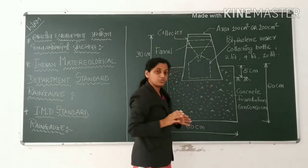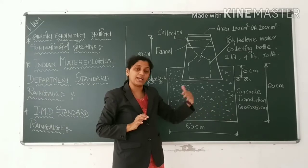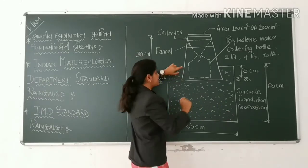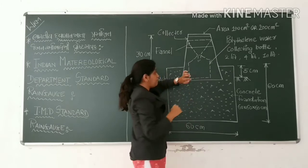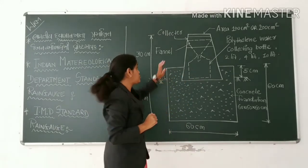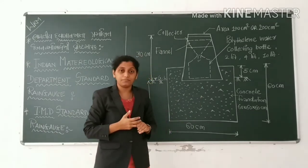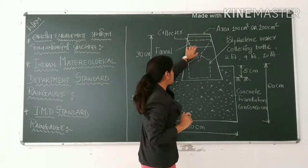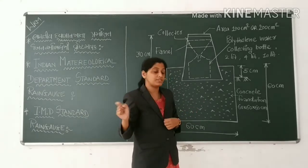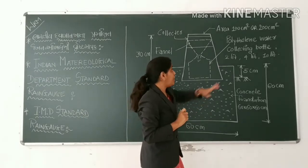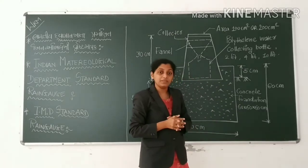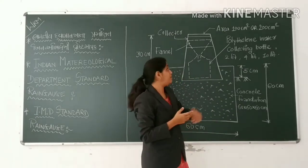The rain gauge is a human element instrument. The collector is the first part of the standard rain gauge. The top of the collector is typically 100 cm² in area, and the second part is also the collector.